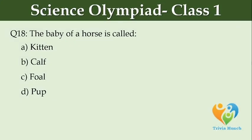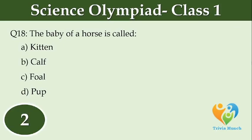The baby of a horse is called dash. Option A: Kitten. Option B: Calf. Option C: Foal. Option D: Pup.